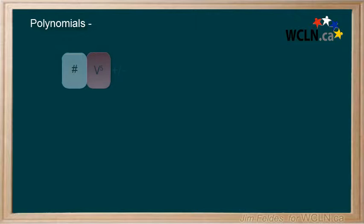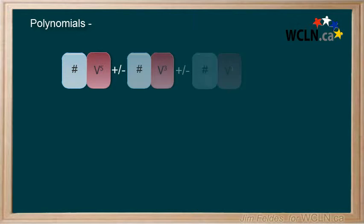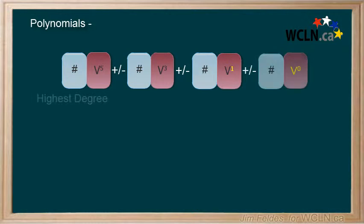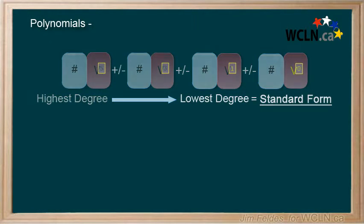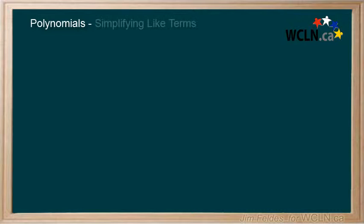In our last section, we learned that the terms in a polynomial should be arranged into standard form, from the highest degree to the lowest degree. In this section, we'll learn to identify and combine terms that are alike to make sure our polynomials are in their simplest form.